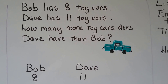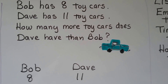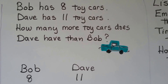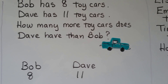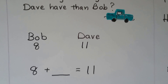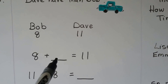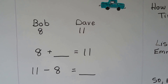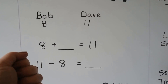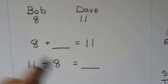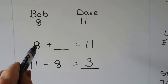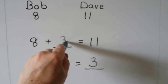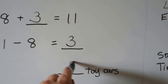Bob has 8 toy cars. Dave has 11 toy cars. How many more toy cars does Dave have than Bob? Bob has 8, Dave has 11 — we need to find the difference, and difference means subtraction. We can write it as: 8 plus some number equals 11, or use the related sentence 11 minus 8. We can count back from 11: 11, 10, 9, 8 — that's 3. Or start from 8 and count on to 11: 8, 9, 10, 11 — 3. Either way we get 3, so Dave has 3 more toy cars than Bob.